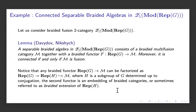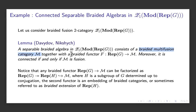For non-trivial examples, let's look at braided fusion two-categories — specifically the Drinfeld center of a fusion two-category. Davydov and Nikshych proved that separable braided algebras in the Drinfeld center of mod(RepG) consist of a braided multifusion category M together with a braided functor from RepG into M. Connectedness means the target M is fusion.